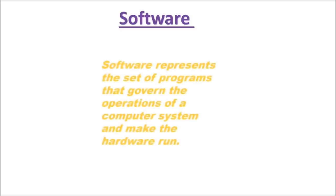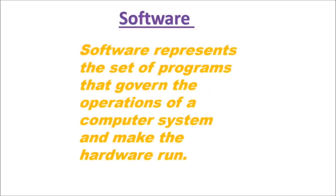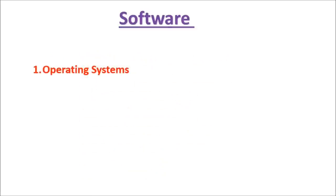Now let us study about software. Software represents the set of programs that govern the operation of a computer system and make the hardware run. Software can be divided into three parts: first operating system, second language processor, third application software.